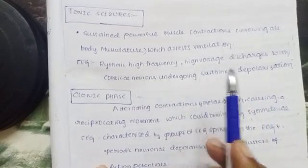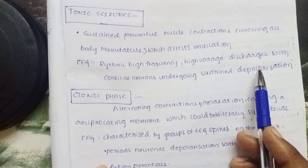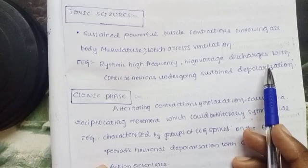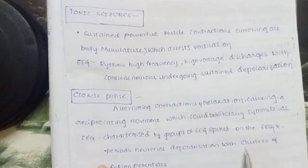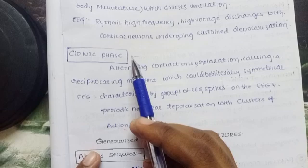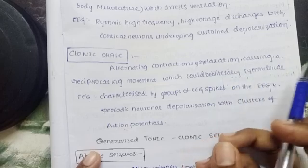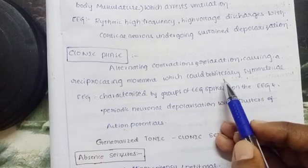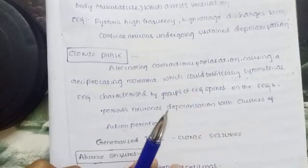Depolarization means sodium or calcium levels in brain neurons are elevated, leading to tonic seizures. Next is the clonic phase. The clonic phase involves jerking moments — alternating contraction and relaxation causing a reciprocating movement which is bilaterally symmetrical. Unlike tonic, this is jerking moments: contraction followed by brief relaxation, then contraction again — these are jerk moments.